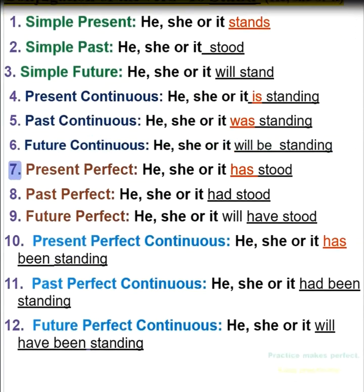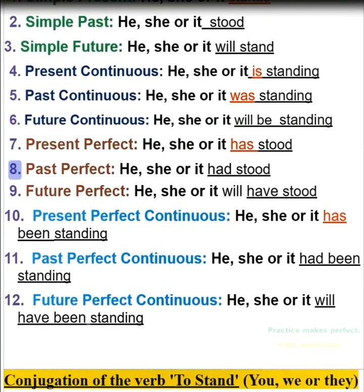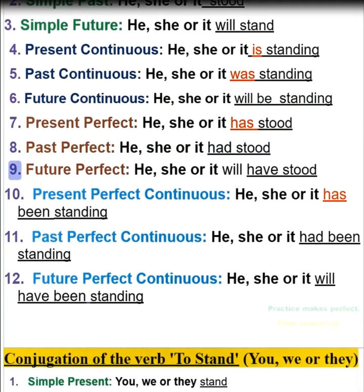7. Present perfect — he, she, or it has stood. 8. Past perfect — he, she, or it had stood. 9. Future perfect — he, she, or it will have stood.